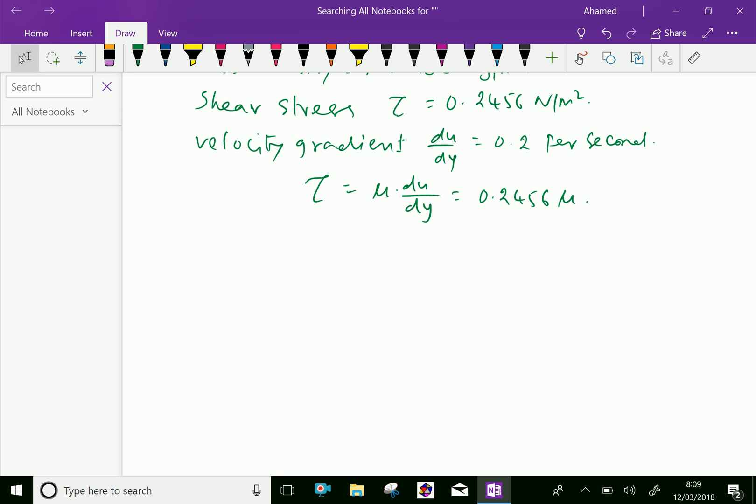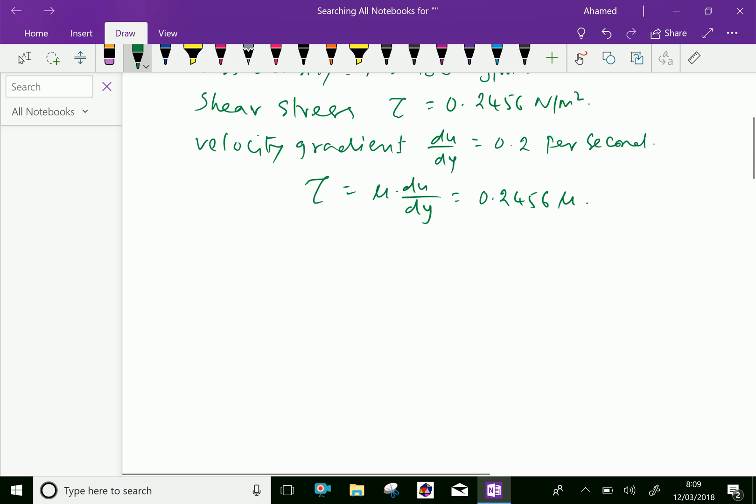Now, here τ is given as 0.2456, and velocity gradient is 0.2 into μ. So 0.2456 equals 0.2μ.